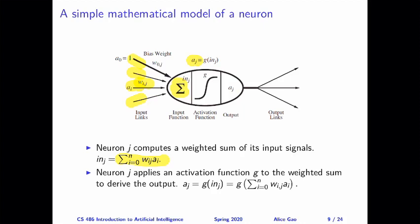After calculating this weighted sum, neuron j is going to apply an activation function called g to this weighted sum to figure out the output signal. Depending on what the activation function is, the output signal may be different.